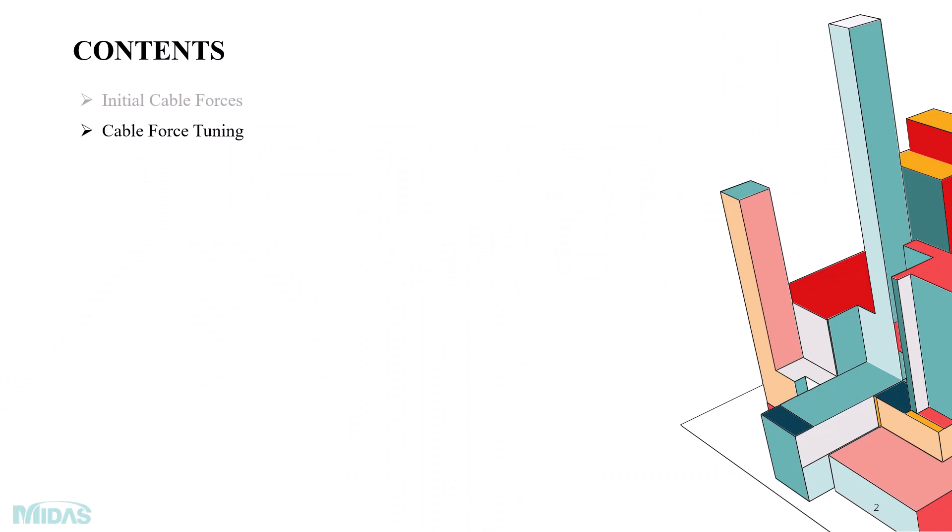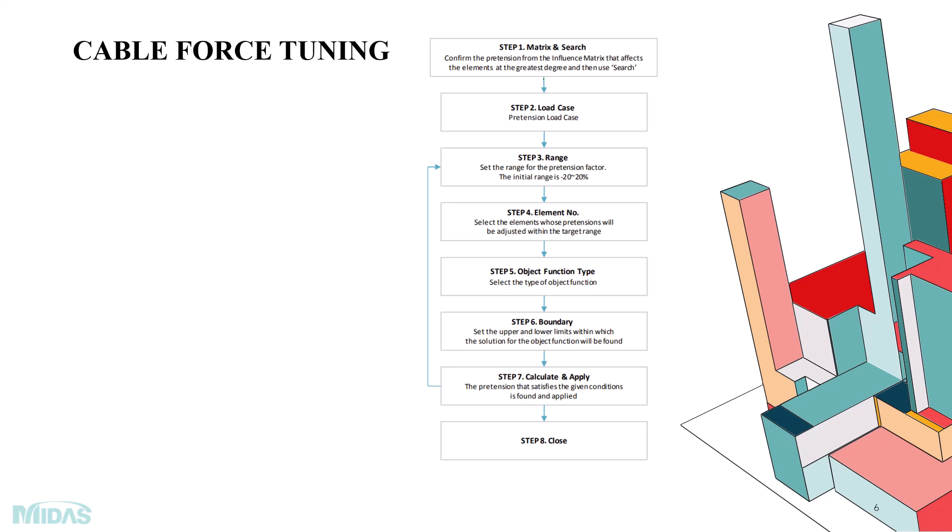Cable force tuning will be the major content for today's video. In the Part 1 video, I already explained the initial cable forces and the unknown load factor method. Even though the unknown load factor function in Midas Civil calculates the initial pretension needed for a cable-stayed bridge, sometimes the designer cannot get the desired initial pretension in one go, especially when the number of constraints is very high. In those situations, the designer should do many iterations by fine-tuning the pretension using the influence matrix to get the initial pretension that produces the desired bending moment and deformation. Cable force tuning helps users attain the desired cable forces without re-analyzing the model.